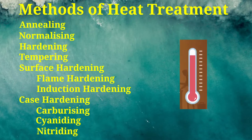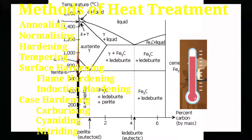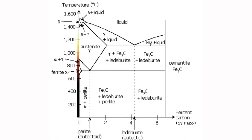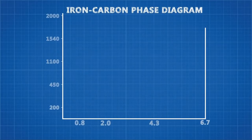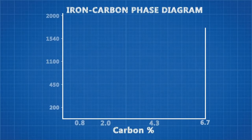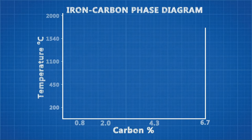The temperature range of almost all these heat treatment processes can be explained with the help of the iron-carbon equilibrium diagram. In this diagram, the carbon contents are shown on the horizontal axis and temperature on the vertical axis. The iron-carbon equilibrium diagram concerns transformations that occur in alloys having compositions from pure iron to cementite.